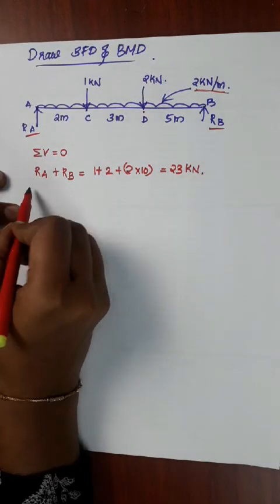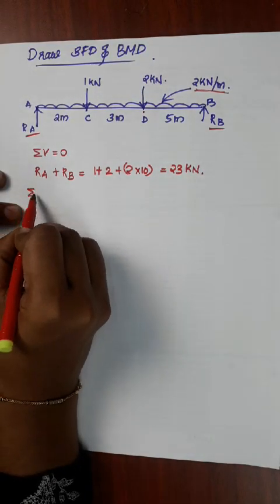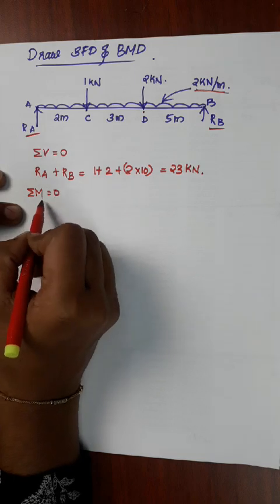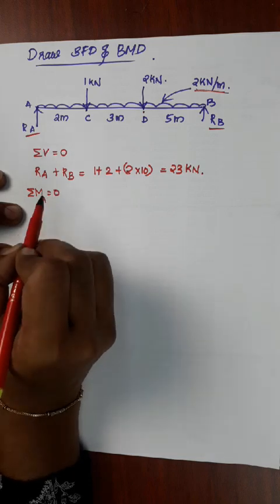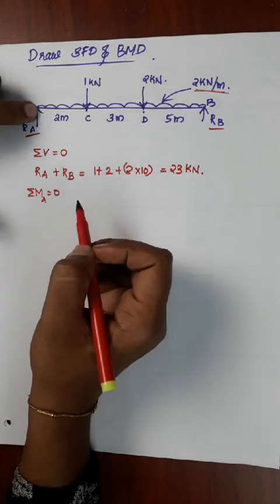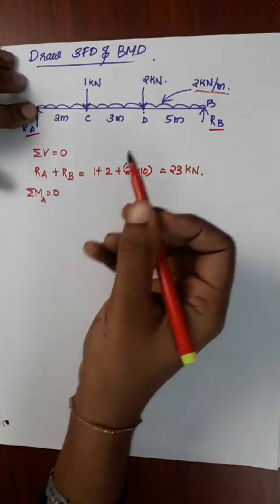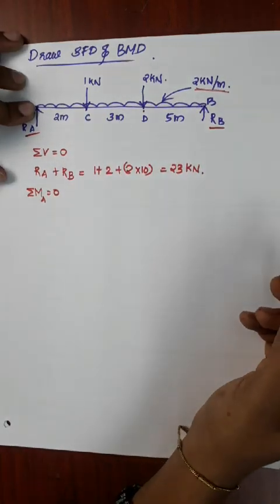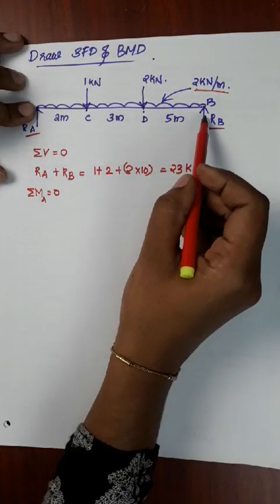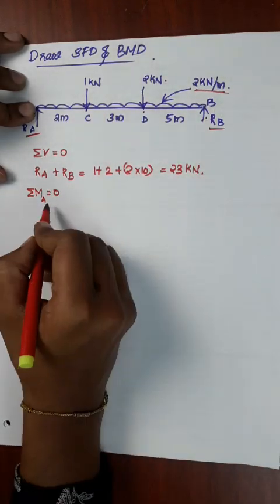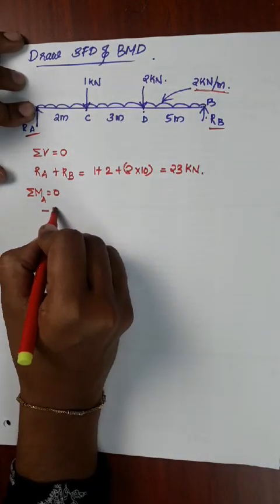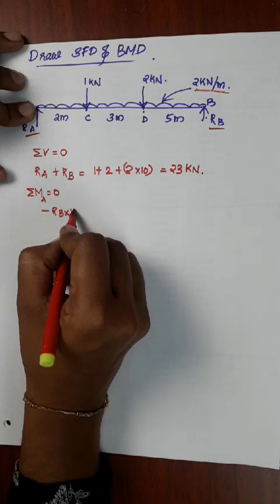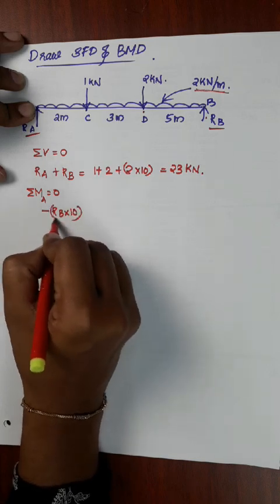Next, applying ΣM = 0 — the moment at any point equals zero. Taking moments at A, we consider the contributions of all four loads.